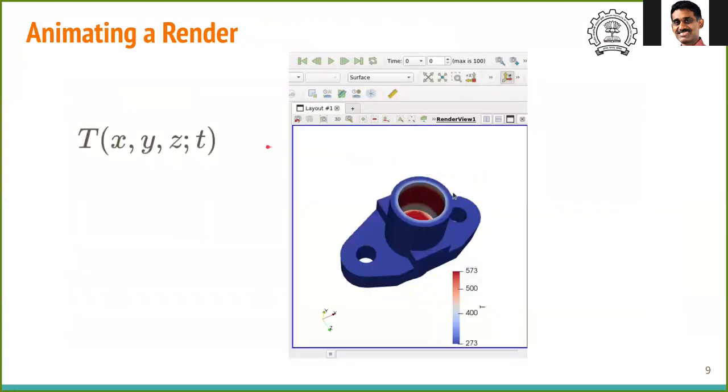We can also look at time variation of temperature. The data file contains temperature profile at various times, that is T as a function of x, y, z and time T. To view this variation, we use the play button at the top.